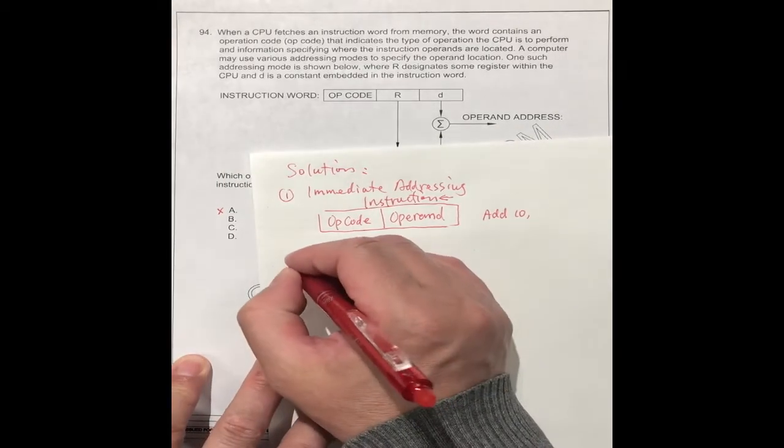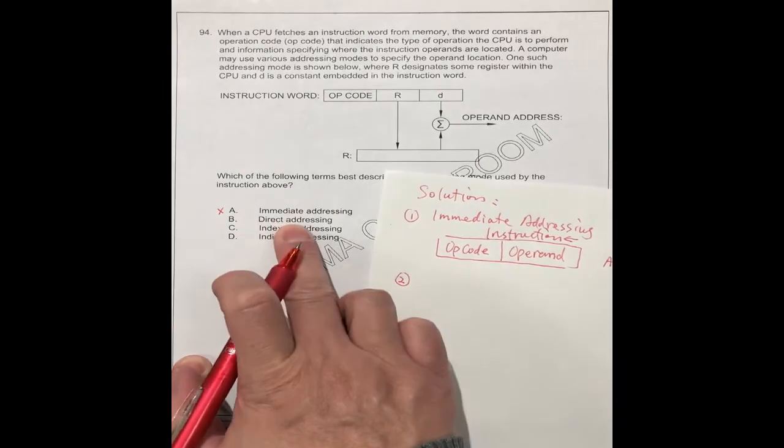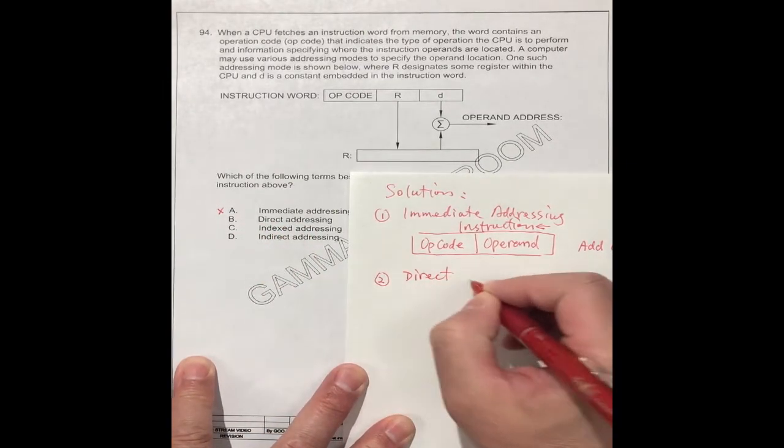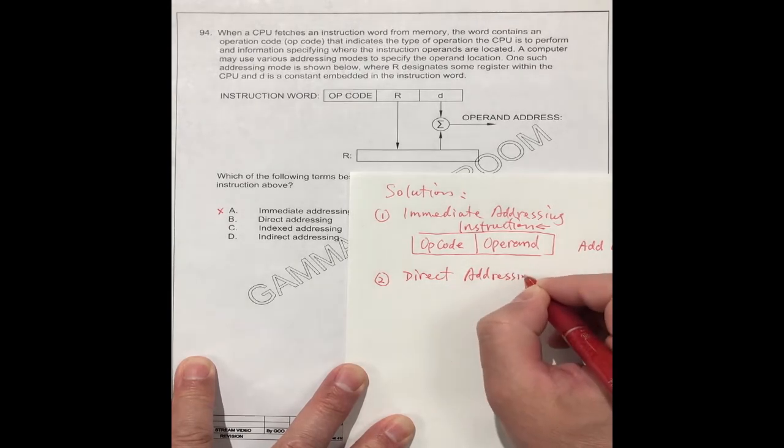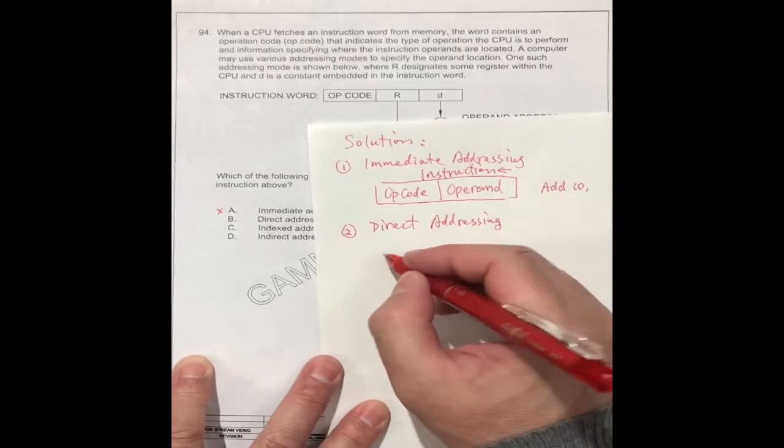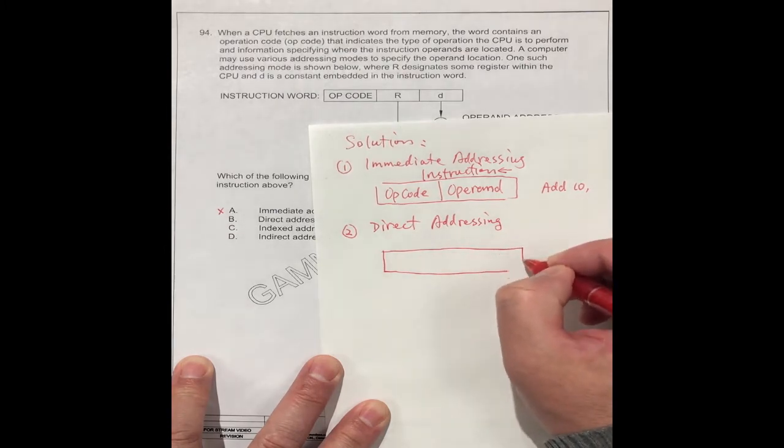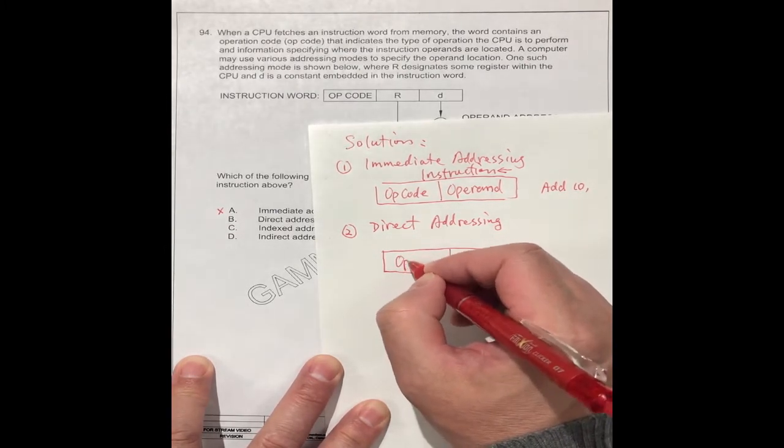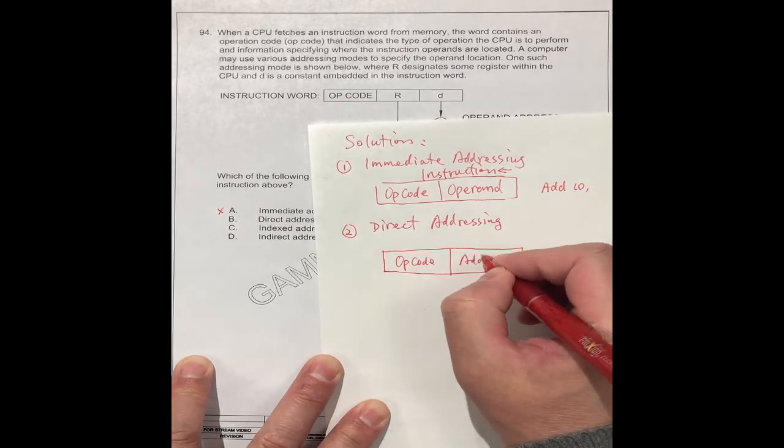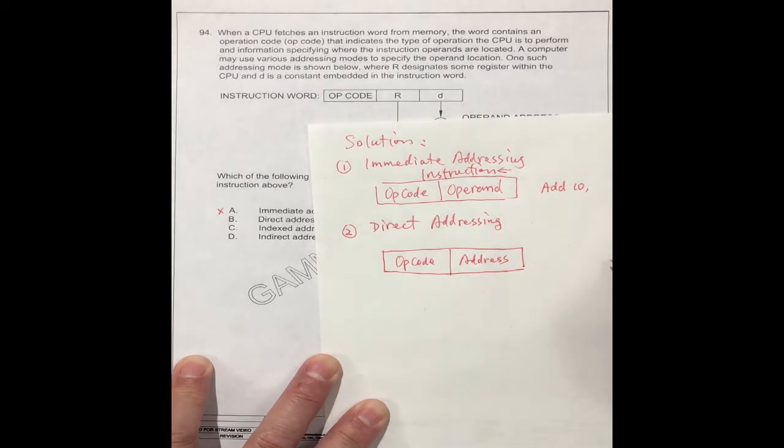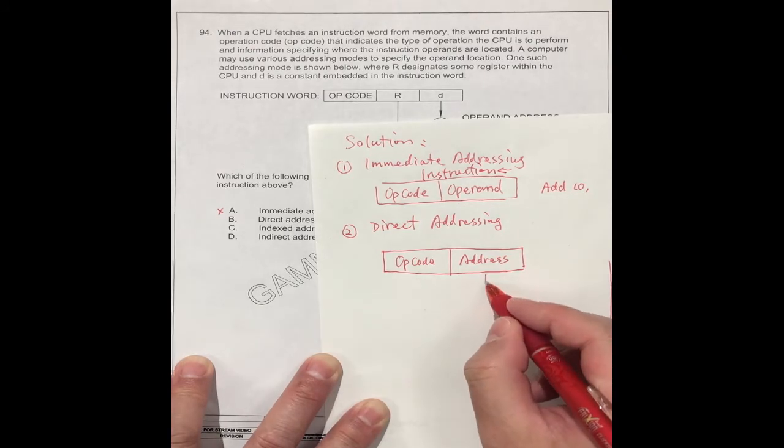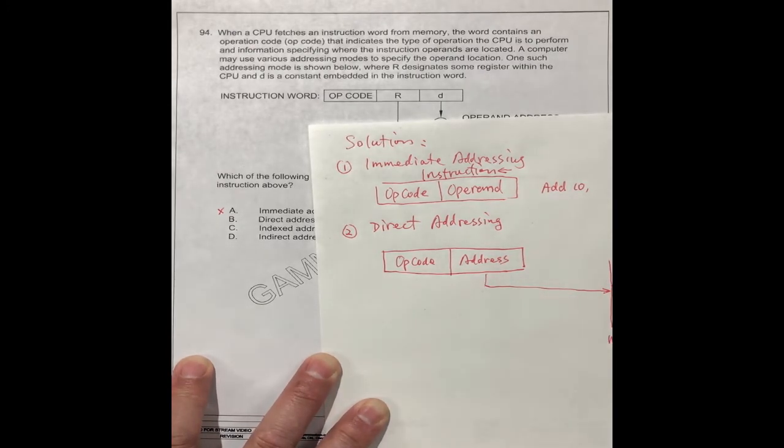And the second one, we call direct addressing. Direct addressing, for example, like this. This is op code, this is the address. They have the memory here. The operand is located in the memory. This is the memory. So this directly points to this point. This is called direct addressing.